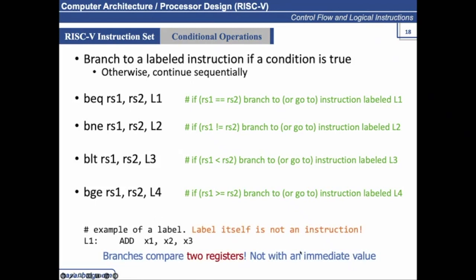An example of a label instruction — remember, a label is itself not an instruction. For example, this instruction BEQ RS1, RS2, L1: if this condition is satisfied, the control will jump to L1 and that instruction will be executed. If the condition does not satisfy, instructions execute sequentially from top to bottom. L1 is just representing an address of this location.